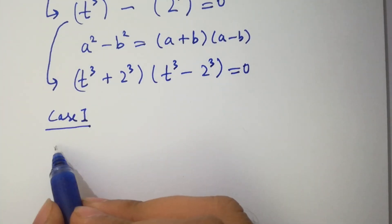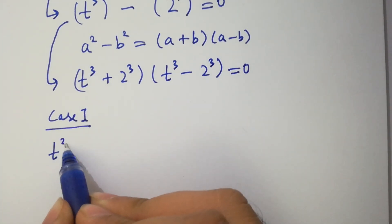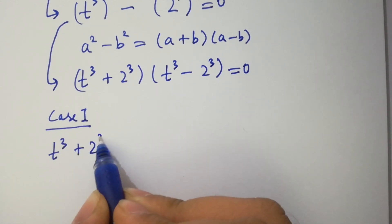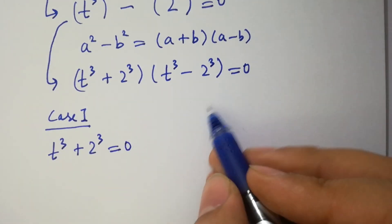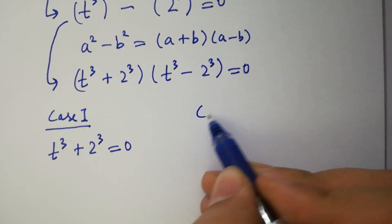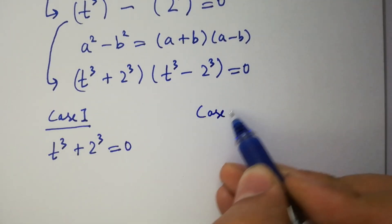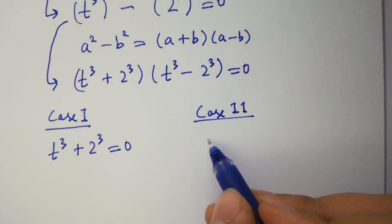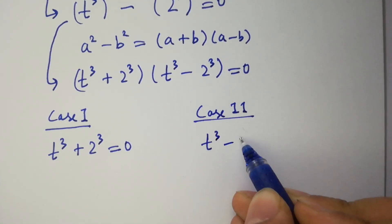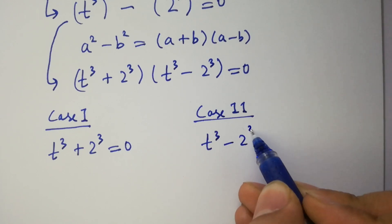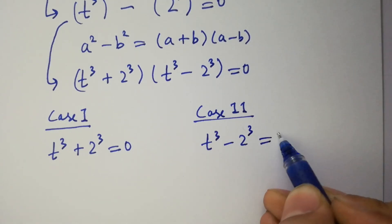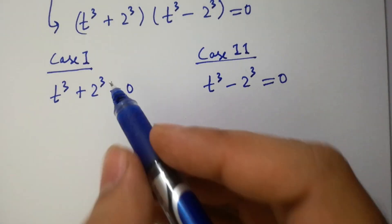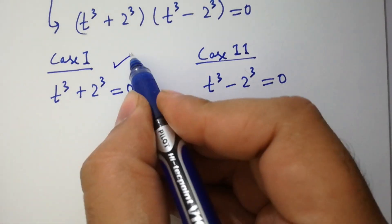t cubed plus 2 cubed equal to 0. And Case 2 is t cubed minus 2 cubed equal to 0. First of all, I am going to solve Case 1.